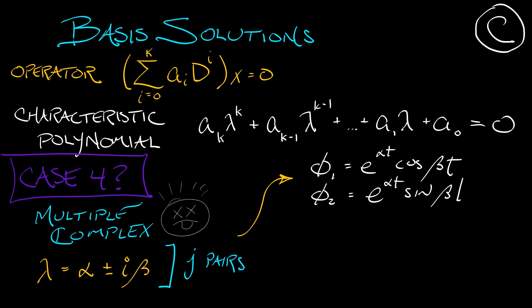The next pair gives us a t out front. And then the next pair, a t squared out front. All the way up until the last, the j-th pair of basis functions is going to be t to the j minus 1 times e to the alpha t, followed by cosine or sine of beta t. That's it. That is all the cases.